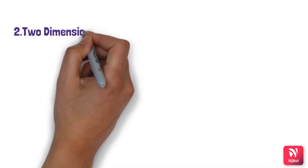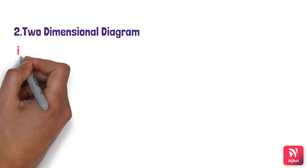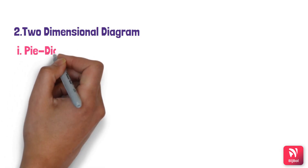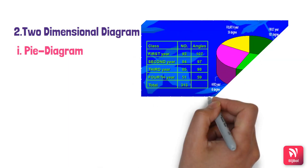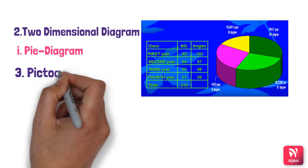Now the next one is two-dimensional diagrams. The first is the pie diagram. These are so called because the entire graph looks like a pie and its components represent slices cut from a pie. The total angle at the center of a circle is 360 degrees and each part represents the frequency. Here each number of individuals according to the year they are studying is represented with a particular angle.